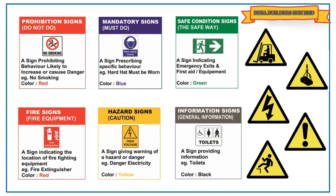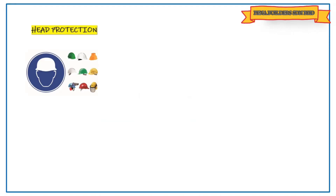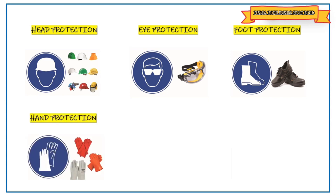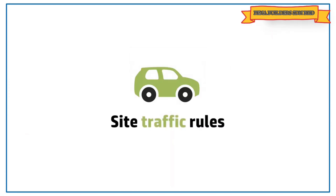PPE must be worn at all times on site. There are two types: mandatory PPE — safety helmet, goggles, and safety shoes; and work-specific PPE — depending on the work activity, additional PPE such as hand gloves, respirators, safety belts, etc. may be required.